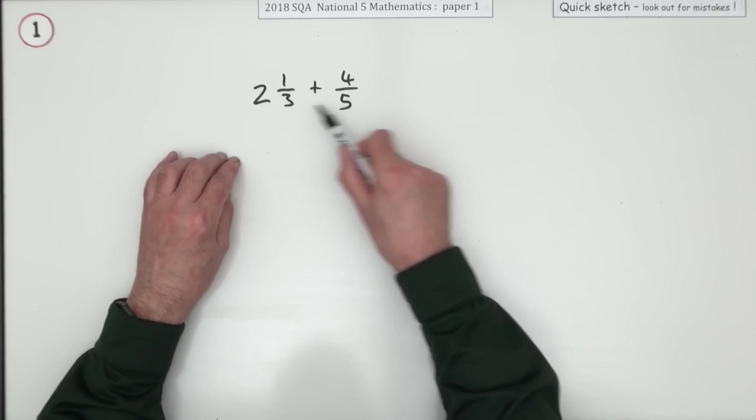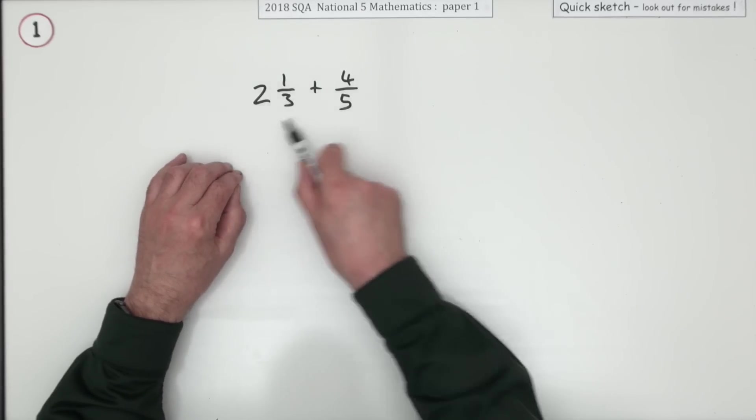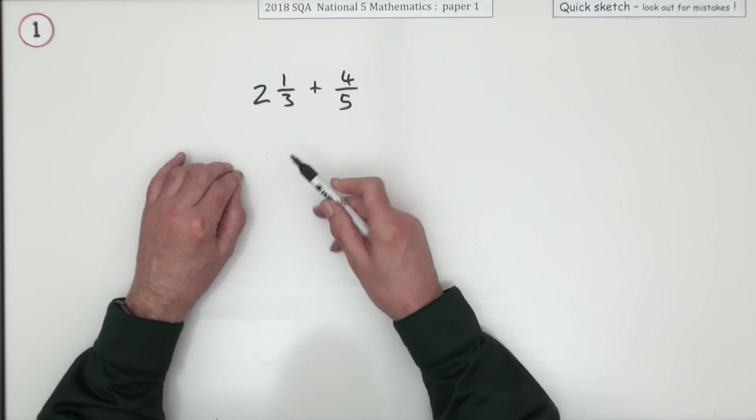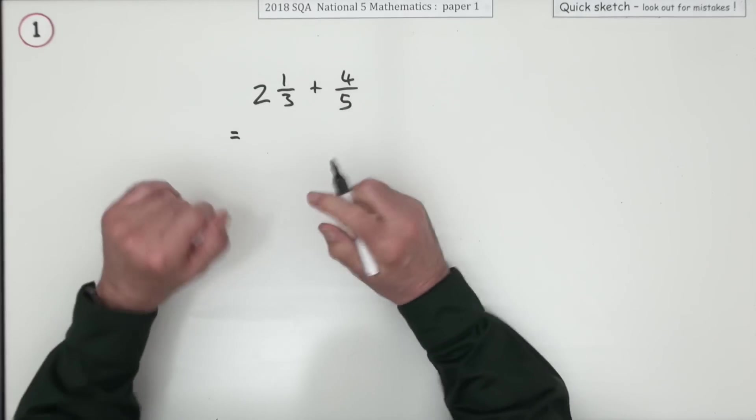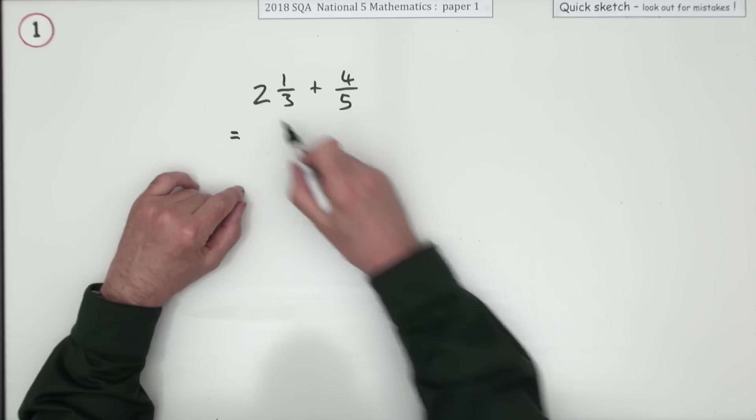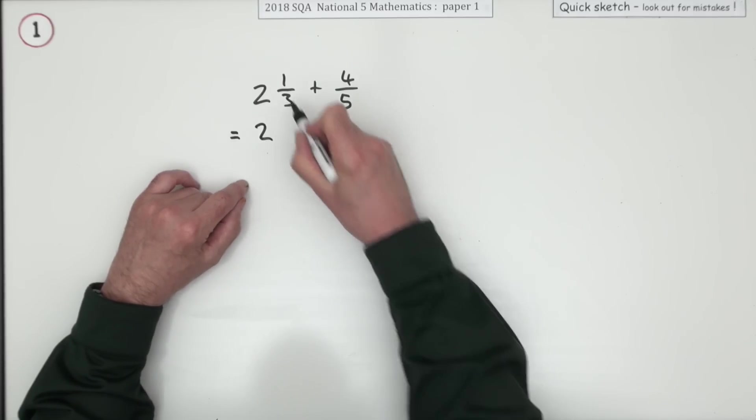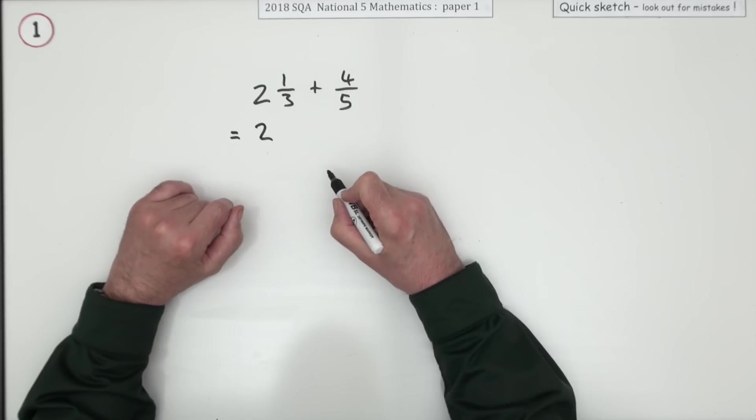Now, there's no need to change them both into single fractions. In other words, to change that mixed number into an improper fraction. Unless, of course, you want to do more arithmetic than necessary. You can add up the whole number parts, that simply comes to 2, and then add the two fractions together.